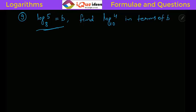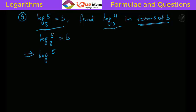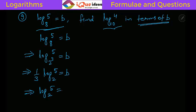Next question: log 5 to the base 8 is given as b. Find log 4 to the base 10 in terms of b. First, since 8 equals 2 cubed, the power 3 comes out to the denominator: log 5 base 8 equals (1/3)·log 5 base 2 equals b. Therefore log 5 base 2 equals 3b.